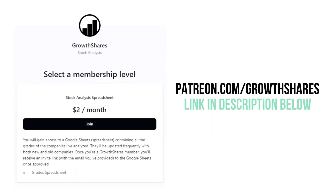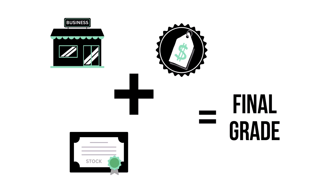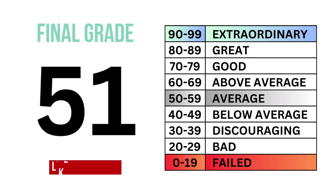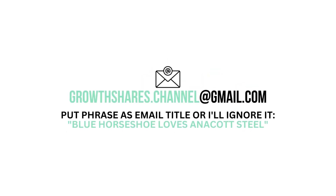Before we calculate our final grade, consider becoming a GrowthShares Patreon member and get access to my spreadsheet with every grade from every company I've analyzed. It's updated all the time — head to patreon.com/GrowthShares or click on the link in the description. By combining the business, the stock, and the price, we can get the overall outlook of the company, which gives us this final grade and its type of investment. This analysis uses public financial data, research, and a proprietary algorithm to come up with the company's grades. But what are your thoughts? Do you agree? Want to talk business? Email me and follow the instructions on the screen. Invest wisely, and as always, take care of your money.